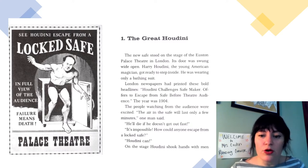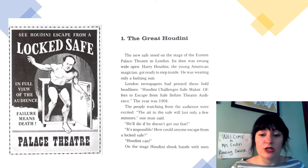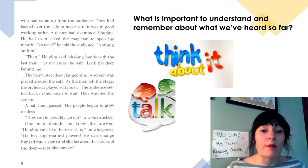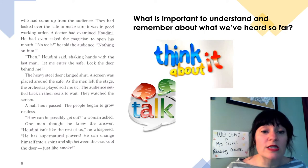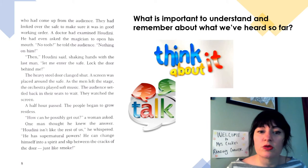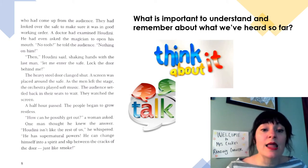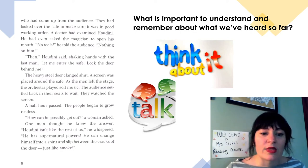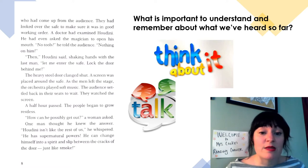'It's impossible. How could anyone escape from a locked safe?' 'Houdini can.' On the stage, Houdini shook hands with men who had come up from the audience — they had looked over the safe to make sure it was in good working order. A doctor examined Houdini and even asked the magician to open his mouth. 'No tools,' he told the audience. 'Nothing on him.' Then Houdini said, 'Let me enter the safe. Lock the door behind me.' The heavy steel door clanged shut. A screen was placed around the safe, and as the men left the stage, the orchestra played soft music.